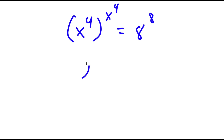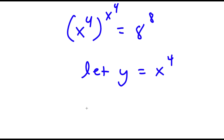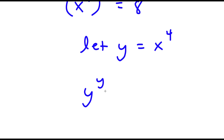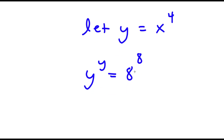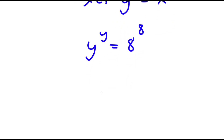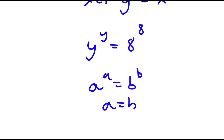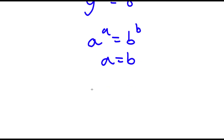Now I'm going to let y equal x to the power of 4. So if I replace y for x to the power of 4, I get y to the power of y is equal to 8 to the power of 8. Now if I have something in the form a to the power of a is equal to b to the power of b, then a is equal to b. So in this case, y is equal to 8.